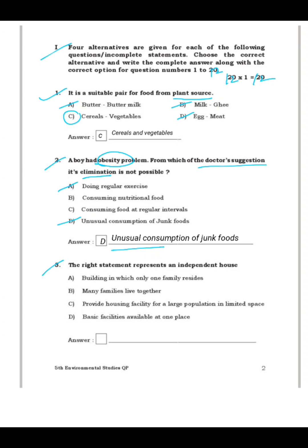Question 3: Which statement represents an independent house? A building in which only one family resides — yes, that's an independent house. Many families living together — no. Providing housing for a large population in limited space — no. Basic facility available at one place — no. So A is the right answer.